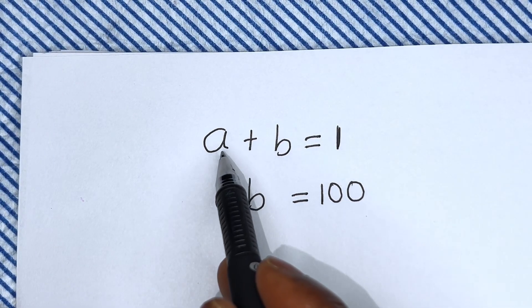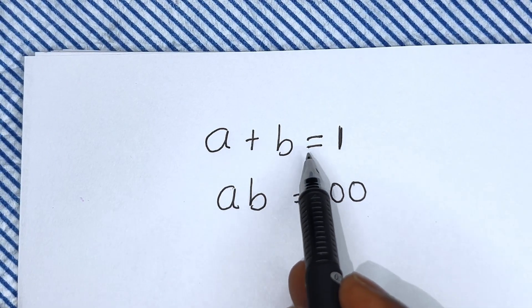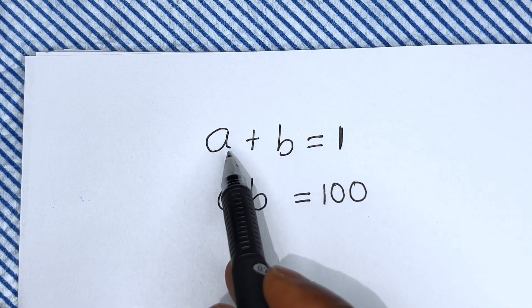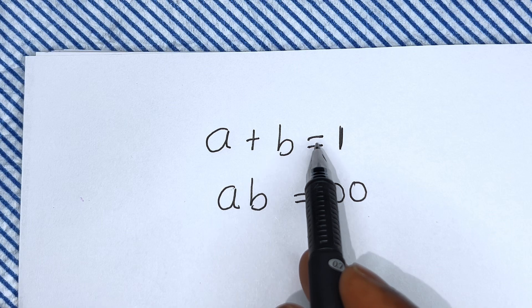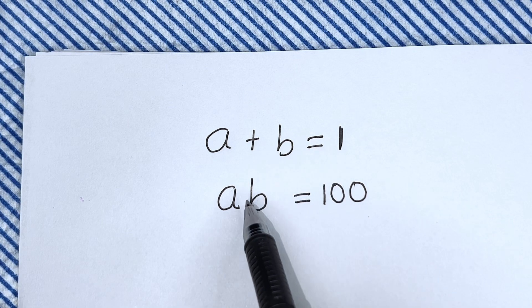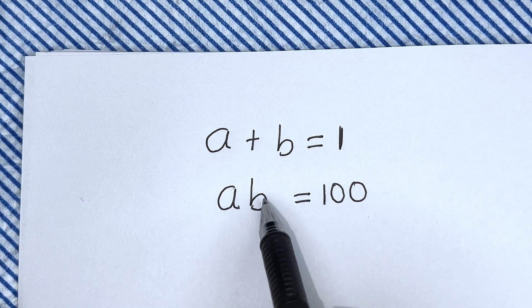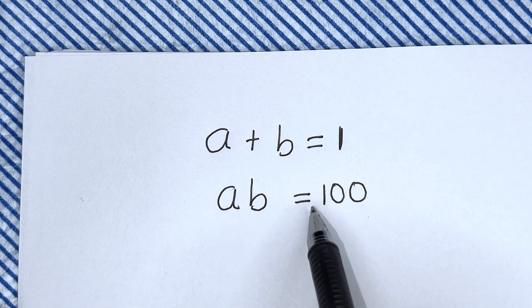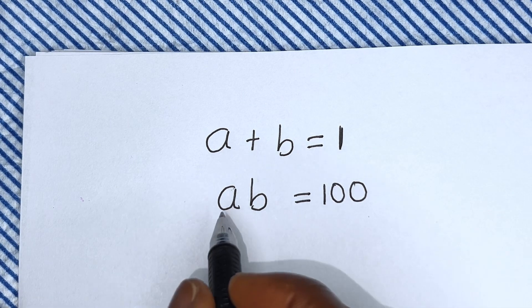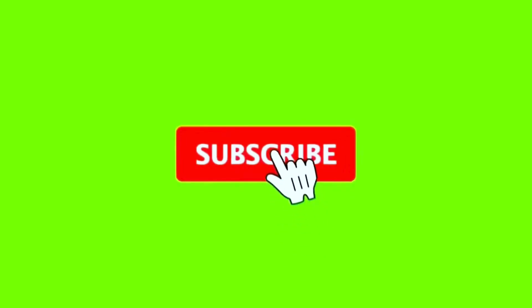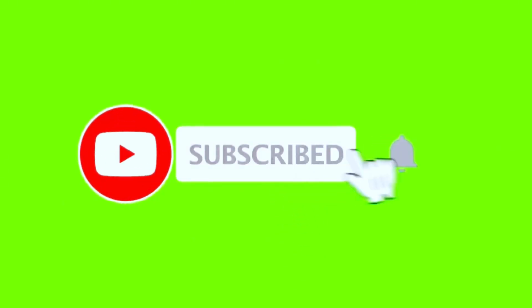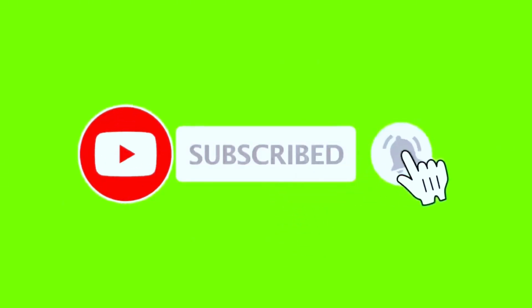Hello. How to solve for a and b in this equation: a plus b is equal to one, and ab is equal to 100. But before we proceed, please don't forget to like, share, comment and subscribe to my channel. Thank you. Solution.